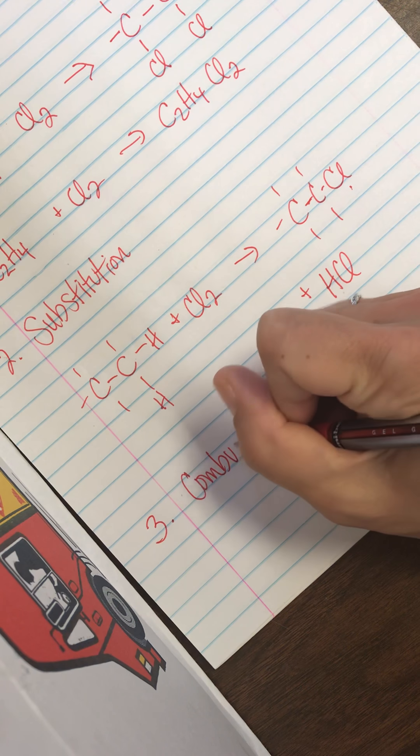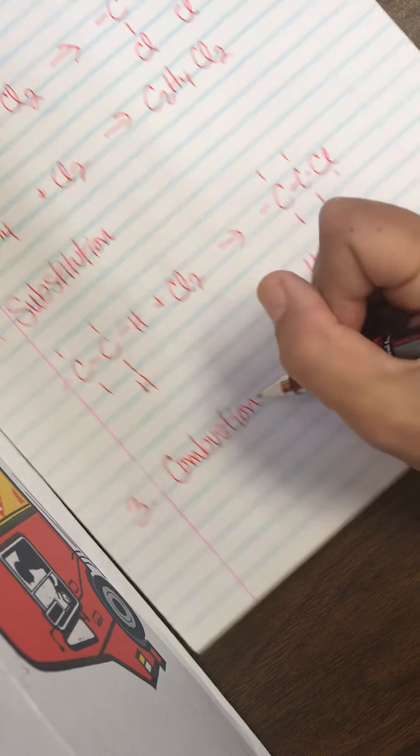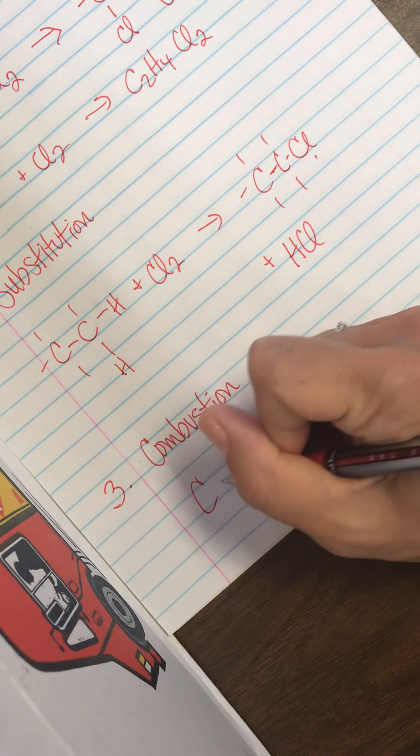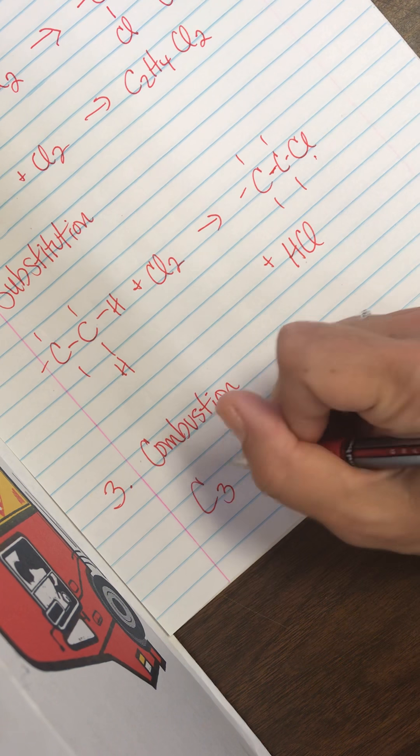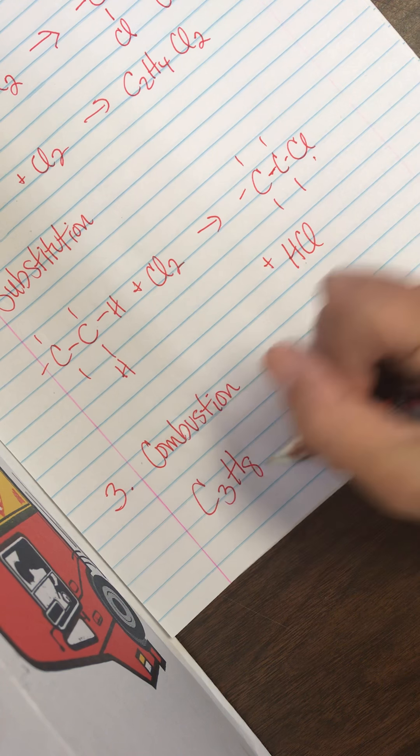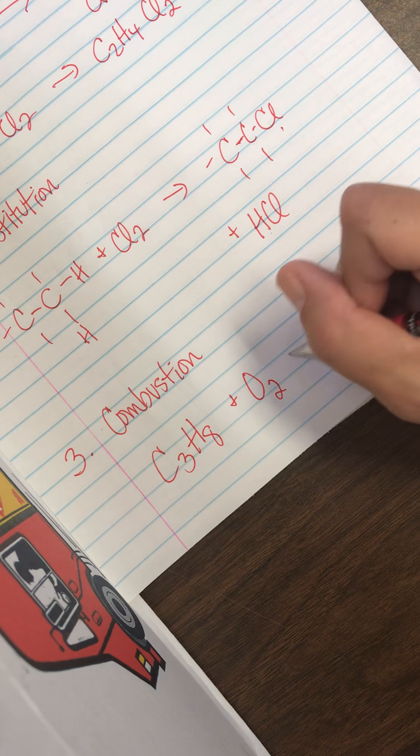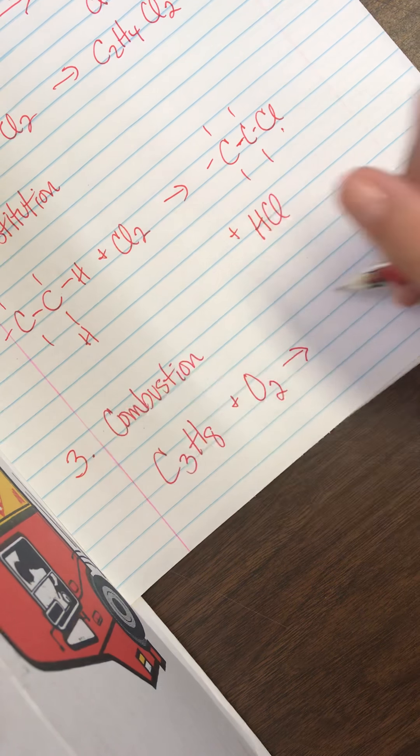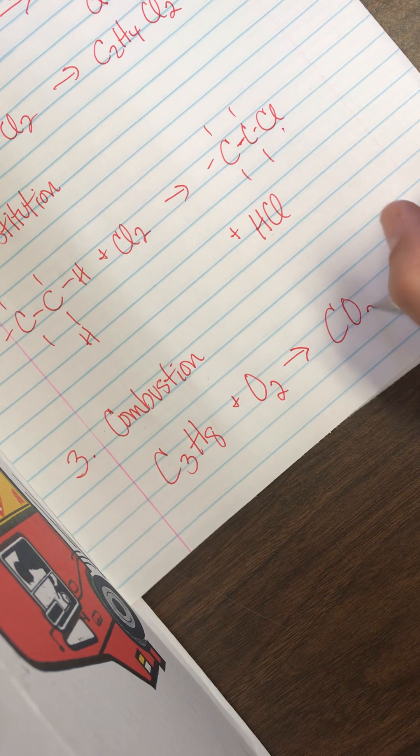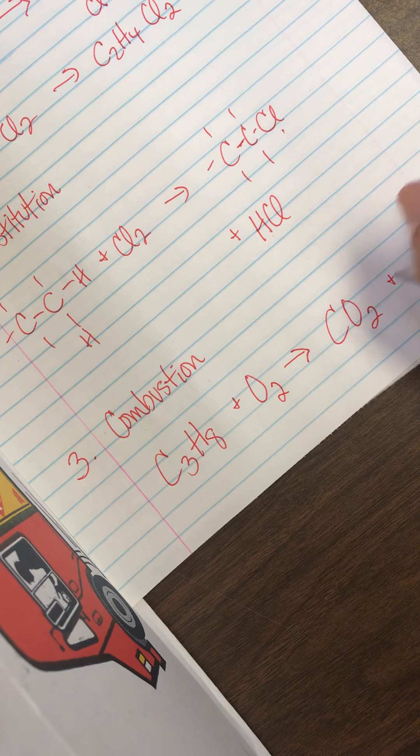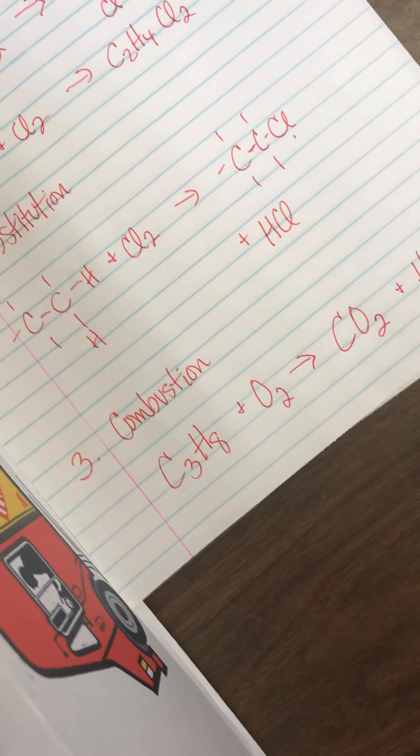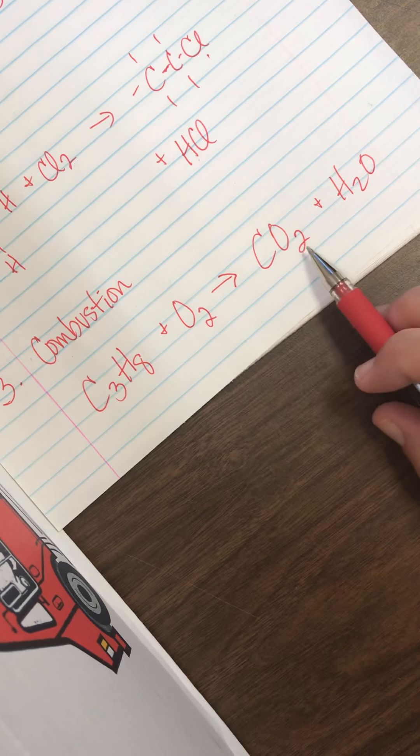All right. The next one is combustion. And to combust means to burn. So we could start with a molecule like C3H8. And you have to add oxygen to have a fire, to have burning. The products of combustion are always the same: carbon dioxide and water. Very easy to recognize.